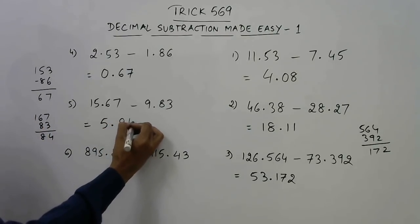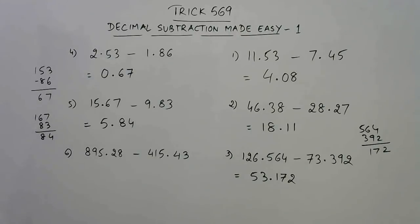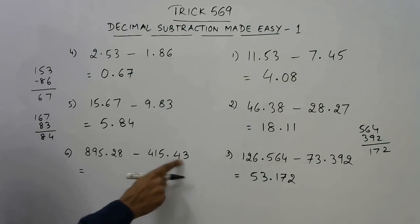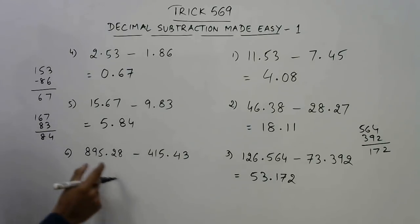So 84 will come after the decimal place. Let us understand this in a better way by solving this one. Now see, this is smaller, 28 is smaller than 43. So reduce this by 1: 894.